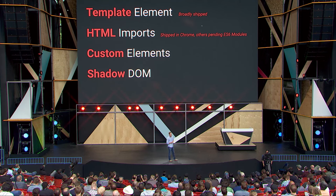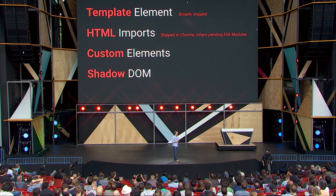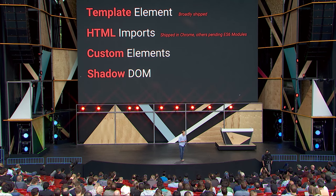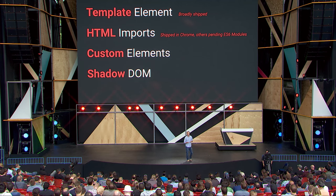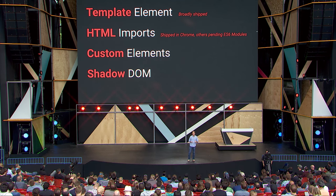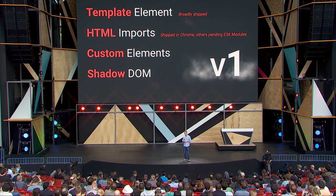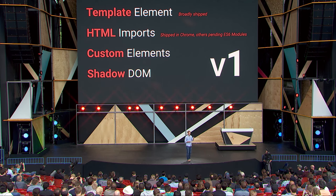Web components is really an umbrella term for four lower level primitives: template, HTML imports, custom elements, and Shadow DOM. Template elements are broadly shipped across browsers. HTML imports are shipped in Chrome, and others are pending ES6 module shipping. But custom elements and Shadow DOM are really the two most powerful primitives to let you extend HTML and create your own web components. Thanks to broad cross-browser collaboration from all the major browser vendors, custom elements and Shadow DOM specs just hit a major milestone with V1.